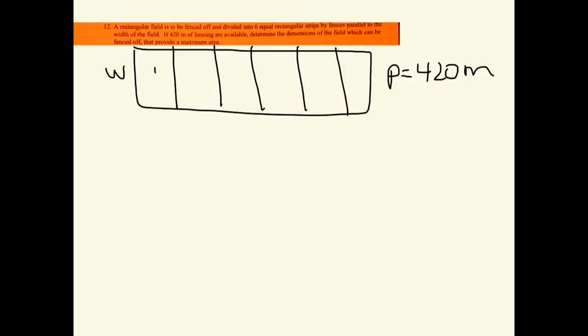So let's look at what we have. We have a width, width, width, all the way across. And we have length and length. So an expression that I can use for my perimeter is two lengths plus seven widths equals 420.